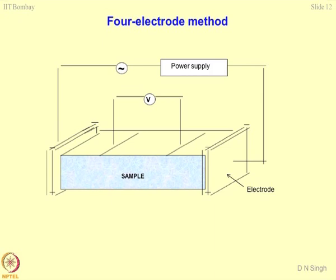In the four-electrode method, you take the sample, apply current across the two external electrodes, and measure the voltage in between. This concept is used in the Schlumberger method for resistivity profiling — you apply current to the outer electrodes and measure the voltage in between. If you know the voltage across two points and their distance, you have a relationship to find out the resistivity of the system.